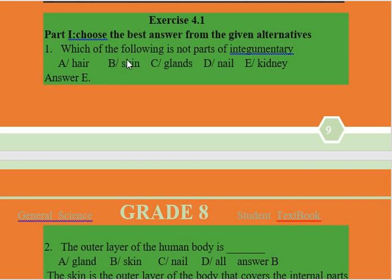Which one of the following is not a part of the integumentary system? A. Hair, B. Skin, C. Glands, D. Nails, E. Kidney.